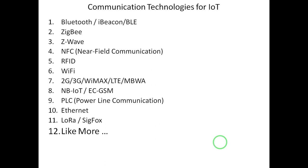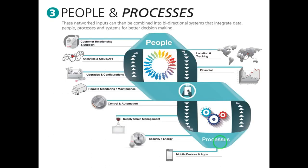The next component is people and process. We have to integrate people — who may be administrators, end users, or contributors — and the process, which is basically the operational technology. Bringing people and process together into the existing IT infrastructure means IT integrated with operational technology is nothing but the Internet of Things. These network inputs can then be combined into bidirectional systems that integrate data, people, process and systems for better decision making.